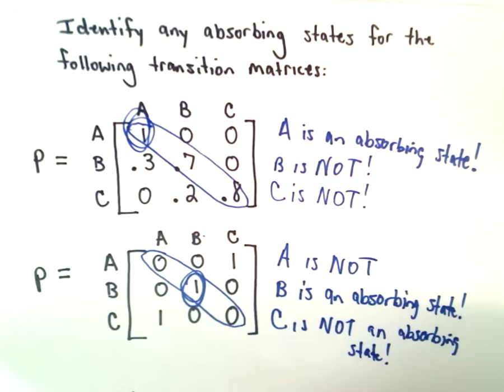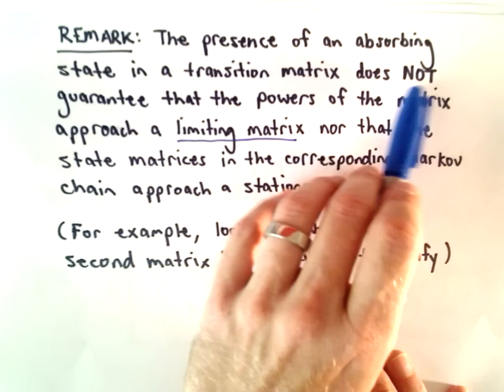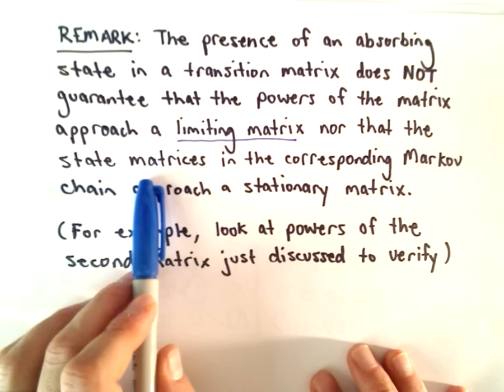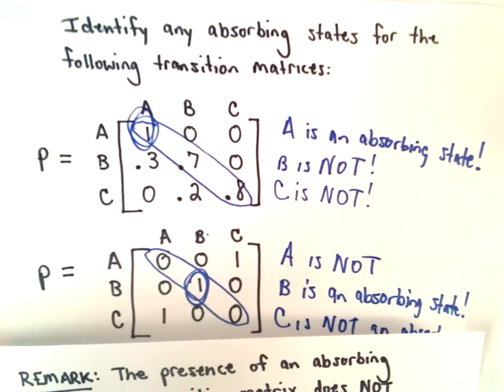A couple of remarks: the presence of an absorbing state in a transition matrix does not guarantee that the powers of the matrix approach a limiting matrix. Just because you have an absorbing state doesn't mean you have a limiting matrix, nor that the state matrices in the corresponding Markov chain approach a stationary matrix. It's not enough to just have an absorbing state and conclude you've got a limiting or stationary matrix.